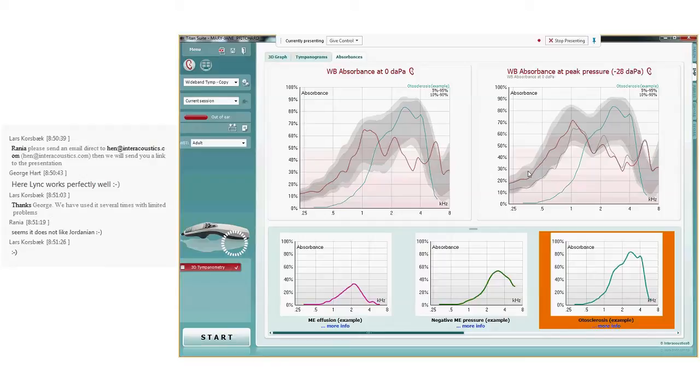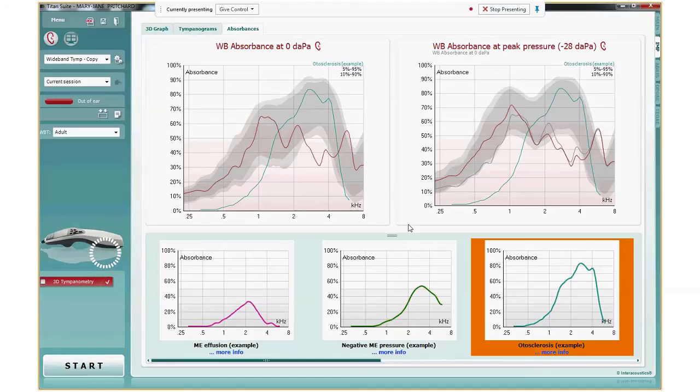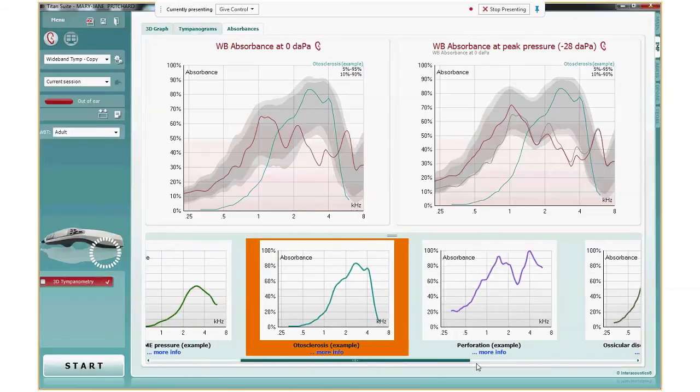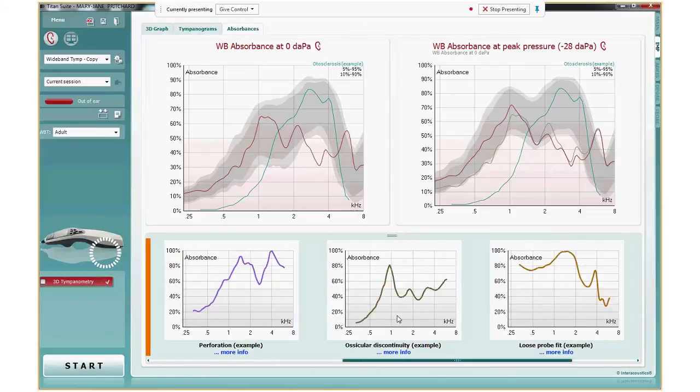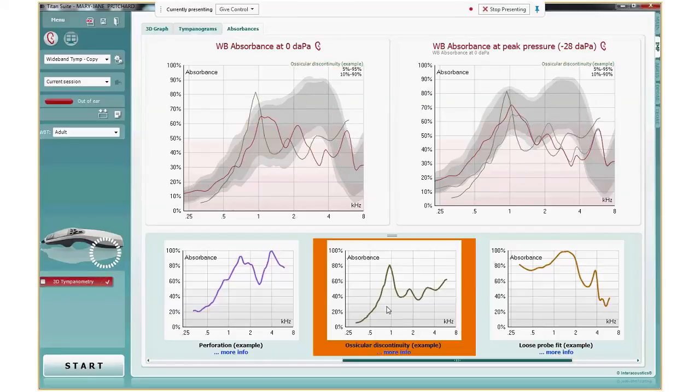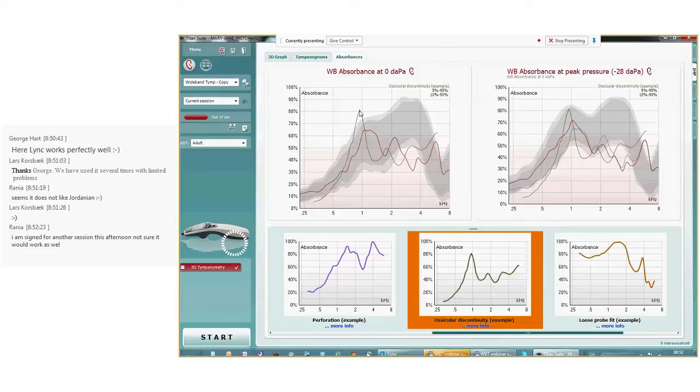Now, the problem is that we were not allowed to put such normative data for pathologies in our system, because the research so far available is not having big enough populations for us to be allowed to implement it. Let me show one example more, because I think the ossicular discontinuity is very interesting. The ossicular discontinuity is an example where there is a high peak of absorbance. This high peak is typically close to the resonance frequency, and very often this peak is even at a lower frequency than in the example that we show here.